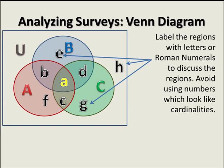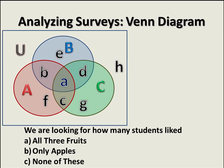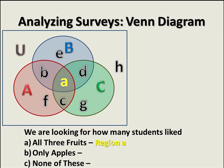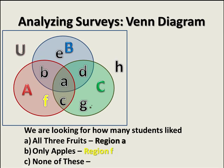Notice the region in the very center, lowercase a — that's often the first region we label because it's the most specific. It includes everyone who likes apples, bananas, and cantaloupe. Part A asks for region a (all three fruits). Part B asks for only apples — that's region F, the part of set A that doesn't overlap B and C. Part C asks for none of these, which is region H.